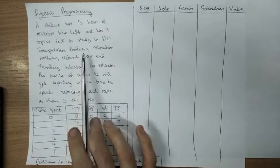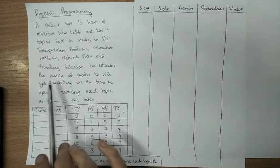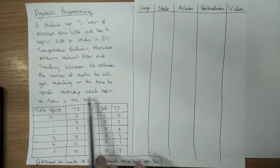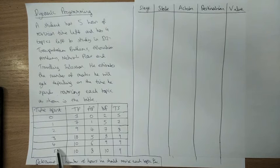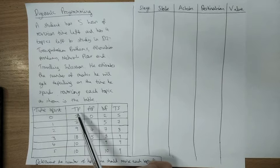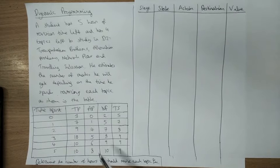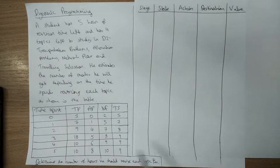A student has five hours of revision time left, and has four topics left to study in D2: transportation problems, allocation problems, network flows, and the travelling salesman problem. He estimates the number of marks he will get depending upon the time he spends revising each topic, as shown in the table. The more hours he spends on each topic, the better mark he'll get in the actual exam. It's not the same for every row because presumably he's already better at some topics than others, and the increases aren't always the same.